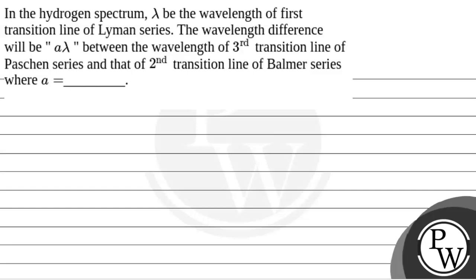Hello. Let's read the question. The question says that in the hydrogen spectrum, lambda is the wavelength of the first transition line of the Lyman series. The wavelength difference will be a·lambda between the wavelength of the third transition line of the first transition series and that of the second transition line of the Balmer series, where a is equal to?